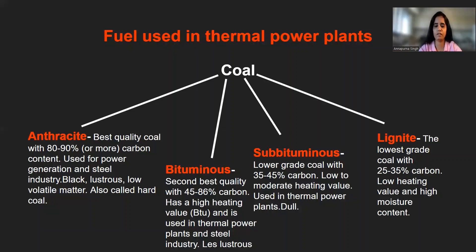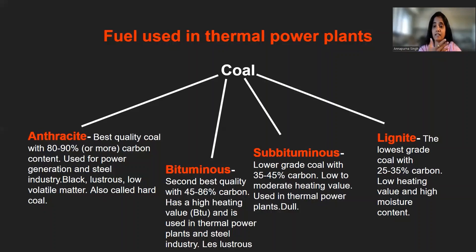The second quality is bituminous. This is the second best quality coal. It has a high heating value measured in BTU — British Thermal Unit. The heating value indicates how much heat the coal produces. Anthracite has the highest heating value because its carbon content is maximum. Bituminous coal also has a high heating value and is used in thermal power plants and the steel industry.